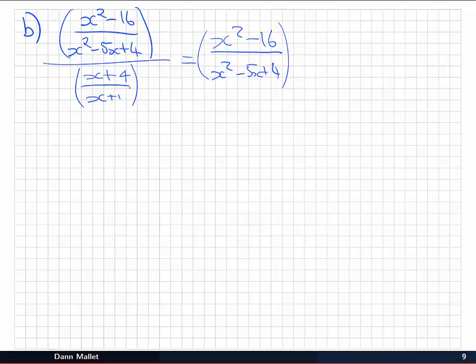Instead of divided by this fraction, I'm going to multiply by its reciprocal. So I'll have (x + 1)/(x + 4). That's the reciprocal of that. Now I'm going to look at factoring. Now remember x² - 16. That's a difference of two squares. So I can write that as (x + 4)(x - 4).